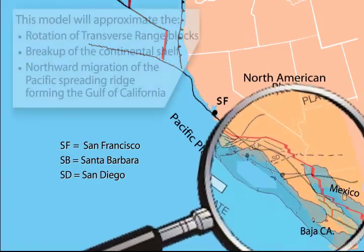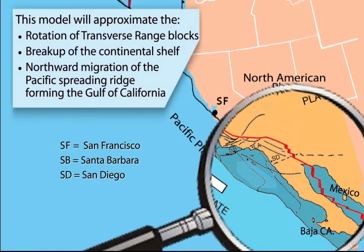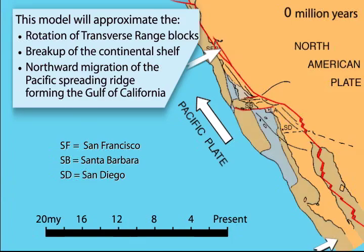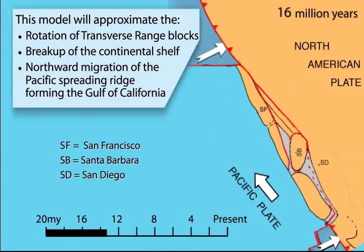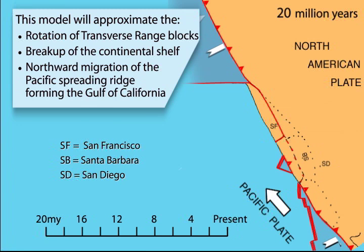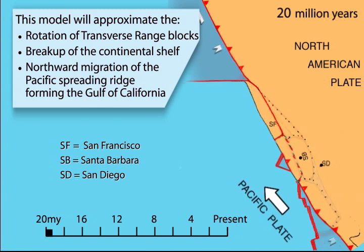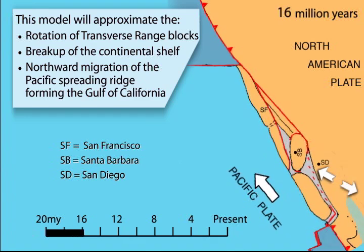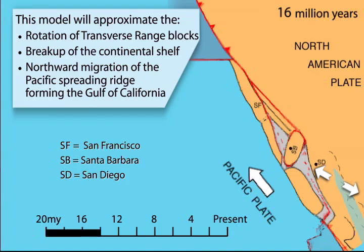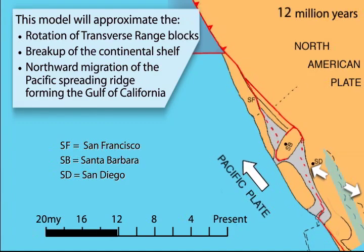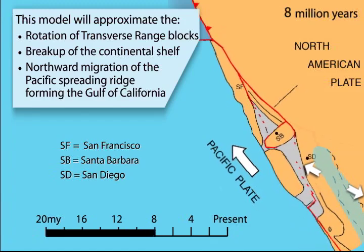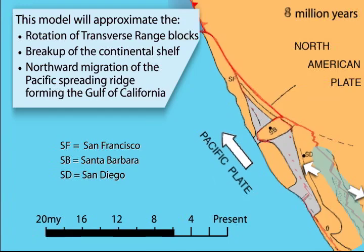Zooming into this smaller region for a more detailed look, we will go back 20 million years to watch how the Gulf and coastal areas developed. This animation by Tanya Atwater shows a tectonic model for the 20 million year evolution of the region, depicting the rotation of the transverse range blocks, the breakup of the continental shelf, as well as the opening of the Gulf of California as the Pacific plate grinds northward against the North American plate.